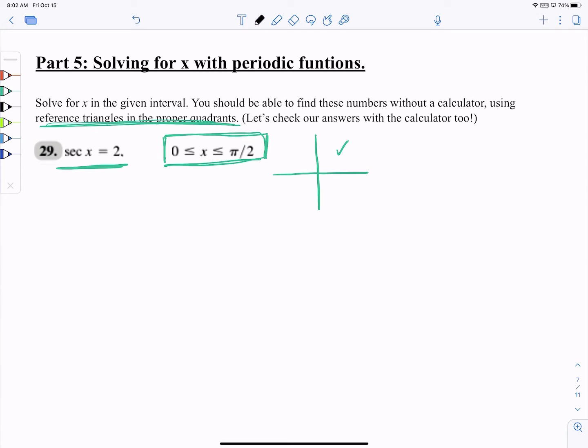So I know that you think this is really cosine of x equals what—you know the reciprocals—so it's going to be 1/2. Now that makes it so much easier, right? You're like, cosine equals 1/2, where does cosine equal 1/2?